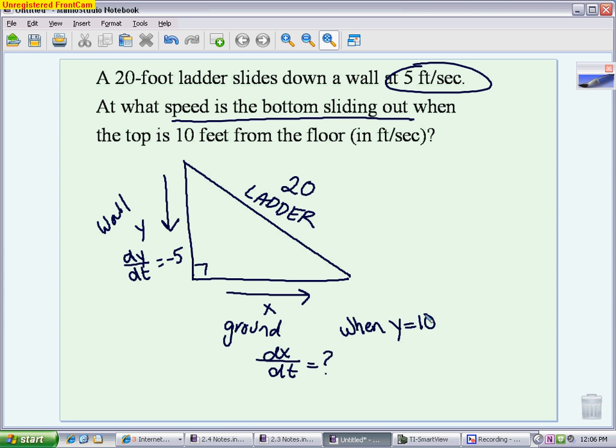Now that we have our picture and we have everything labeled as far as what we know and what we need to find, we need to write an equation that relates x and y. Any time you have a problem that has a right triangle, you first want to think about the Pythagorean theorem. Most problems are Pythagorean problems. So my Pythagorean theorem says a squared plus b squared equals c squared, but in terms of the variables that I called it, it's x squared plus y squared equals 20 squared. Again, I put the 20 in because that's not changing, that doesn't need a variable.